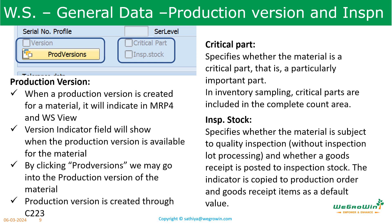Then we have the inspection stock field. This field specifies whether the material is subject to quality inspection and whether the goods receipt is posted to inspection stock. This indicator is copied into the production order while doing the production order confirmation to perform the goods receipt.